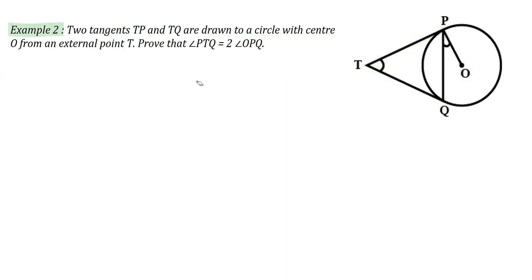What we have to prove here is that these angles are equal. That means they are asking us to prove that angle PTQ is equal to twice angle POQ. This is what we need to prove. First of all, we can name this angle — let's say I am naming this angle as angle 1.